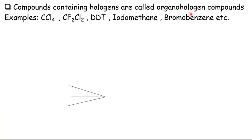Examples of organo-halogen compounds include carbon tetrachloride (CCl4), CF2Cl2, DDT, iodomethane, bromobenzene, and many other examples.